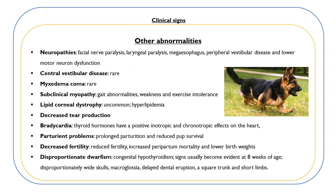Clinical signs that may be present include various neuropathies such as facial nerve paralysis, laryngeal paralysis, megaesophagus, peripheral vestibular disease and lower motor neuron dysfunction. Central vestibular disease is rare. Myxedema coma is a rare syndrome and is the extreme expression of severe hypothyroidism; the course can develop rapidly, with lethargy progressing to stupor and then coma. Subclinical myopathy may cause gait abnormalities, weakness and exercise intolerance, and can be difficult to distinguish from neuropathies.